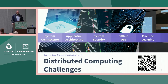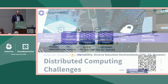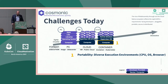If we accept that the future of applications is distributed, we accept there are significant problems to deal with: a diverse set of system architectures, different application architectures — peer-to-peer, device-to-device that don't even transit the public cloud — system security, offline use, and machine learning. There are three key challenges in today's computing environment driving the rise of WebAssembly: portability, security, and the tight coupling between applications and their libraries or capabilities.